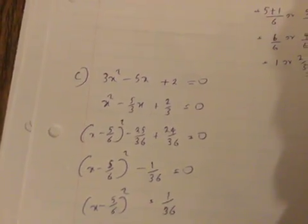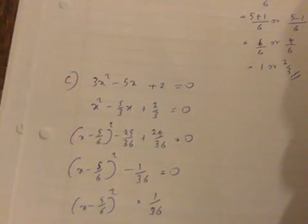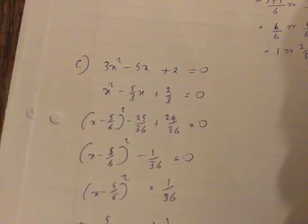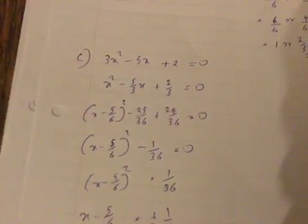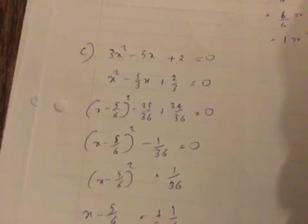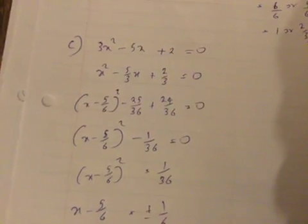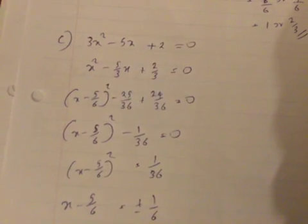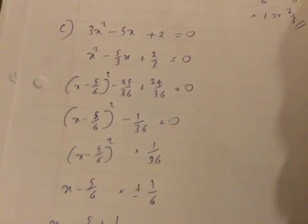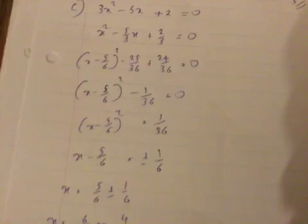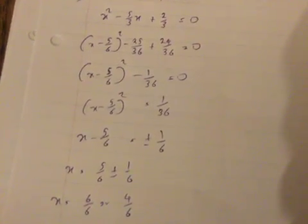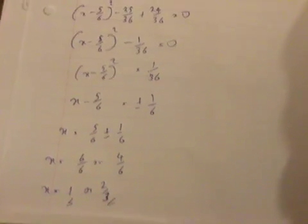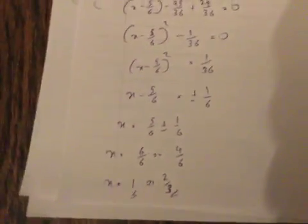Completing the square for 3x² - 5x + 2 = 0: divide through by 3, halve the middle coefficient to complete the square. This gives (x - 5/6)² - 25/36 + 24/36 = 0, so (x - 5/6)² - 1/36 = 0, which simplifies to the same answers.